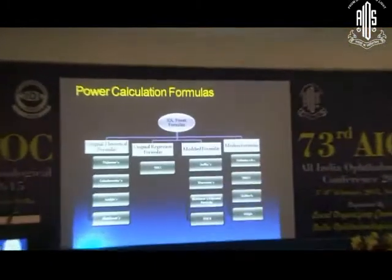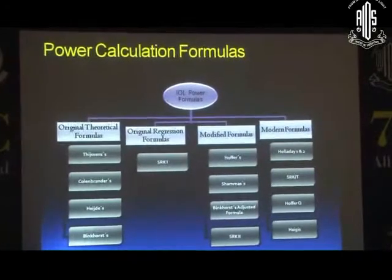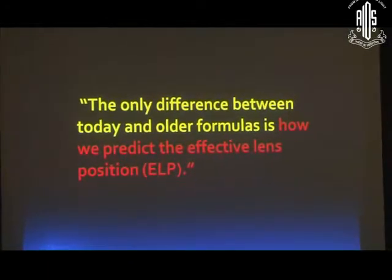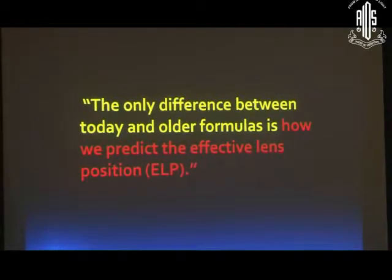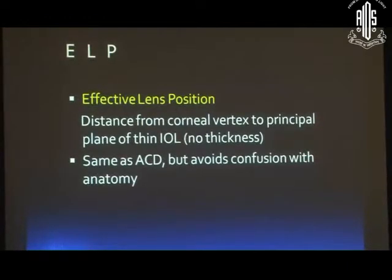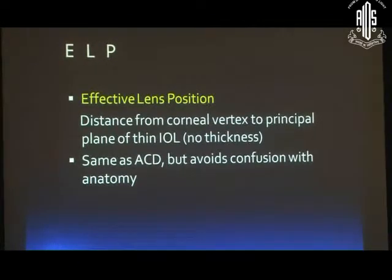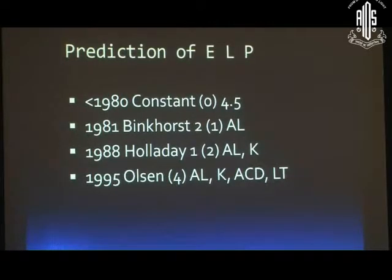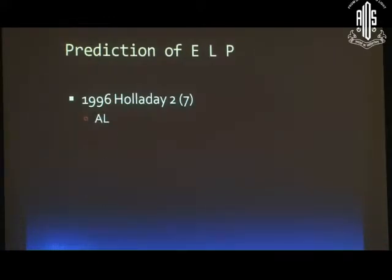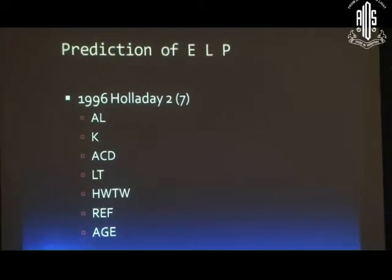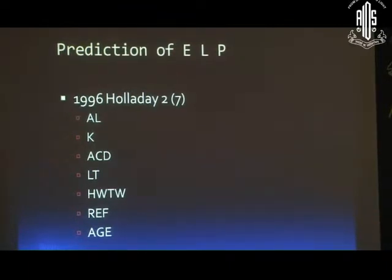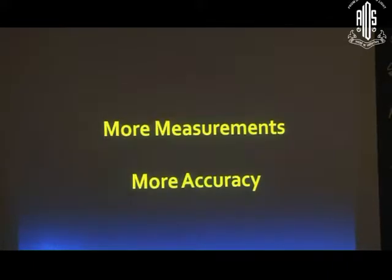Even if you are still using normal ultrasound biometry, there are formulas available. If you have your A constant on ultrasound, you can apply that A constant into your optical biometer as well — you need not do this exercise again. Regarding generations of power formulas: the only difference between today's and older formulas is how we predict the effective lens position. ELP is the distance from the corneal vertex to the principal plane of the IOL. Before the 1980s, ELP was kept at 4.5. In 1981, one variable — axial length — was used. In 1988, axial length and keratometry were added. In 1995, Olsen added four variables: axial length, keratometry, ACD, and lens thickness. In 1996, Dr. Holladay came with 7 variables: axial length, keratometry, ACD, lens thickness, horizontal white-to-white, refraction, and age. More measurements means more accuracy.